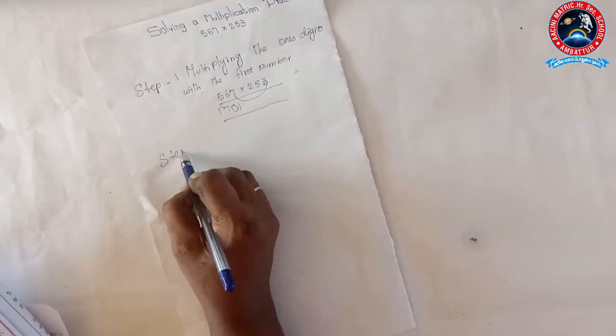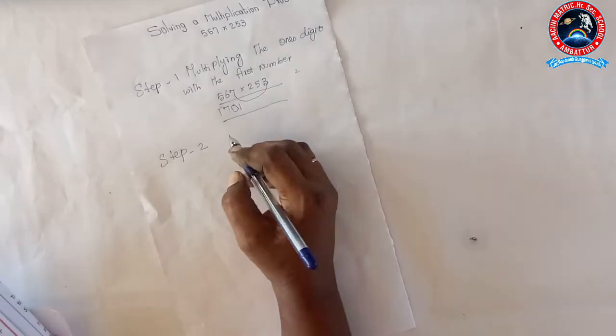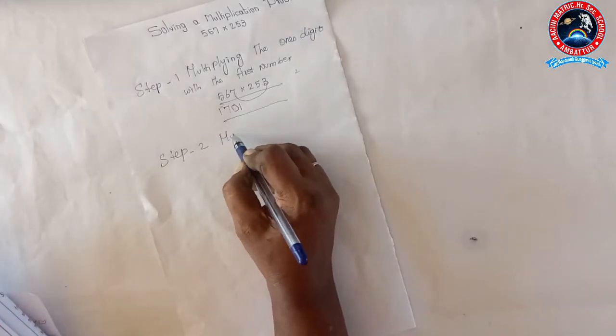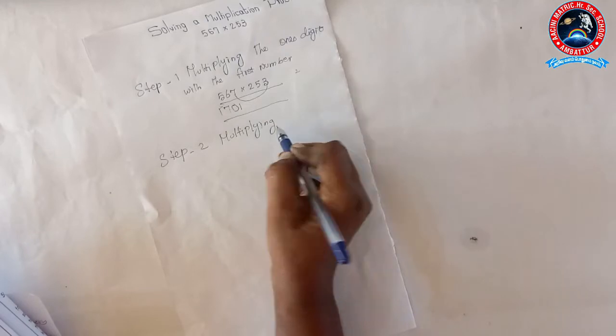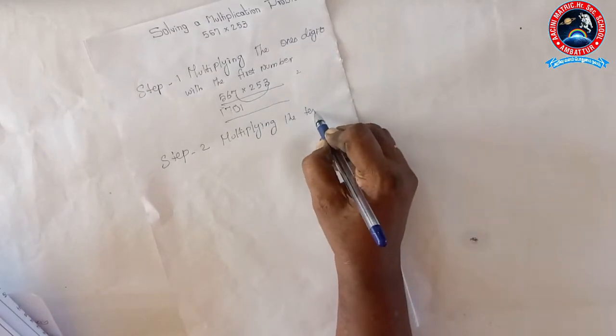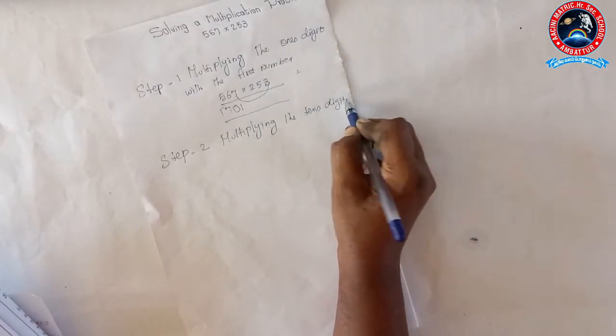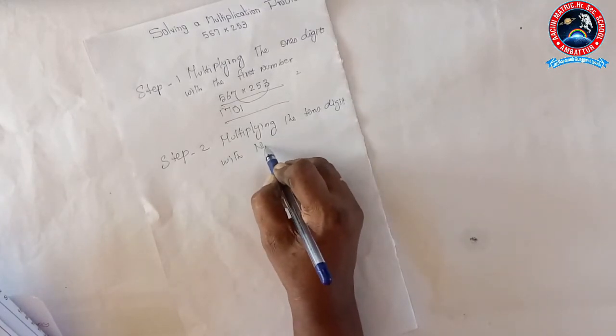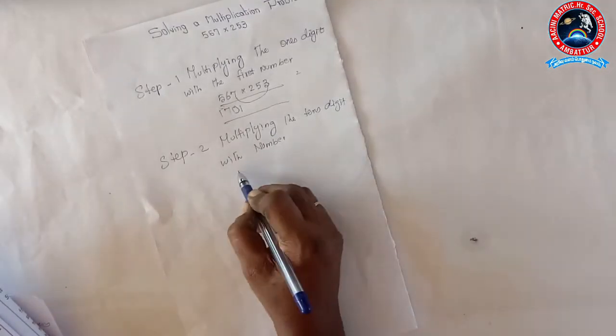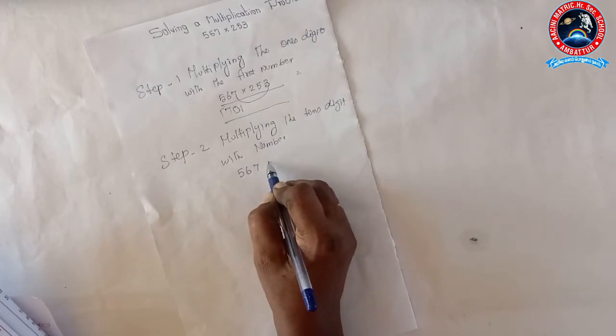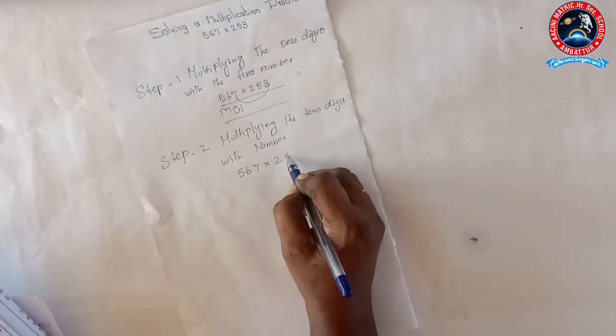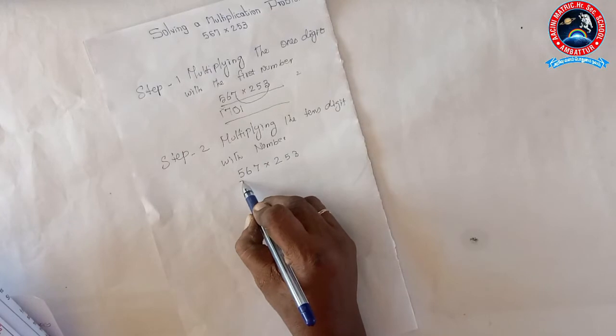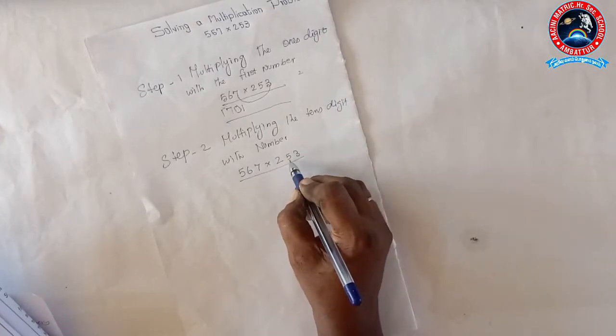Step 2: Multiplying the tens digit with the number 567 into 253, tens digit.